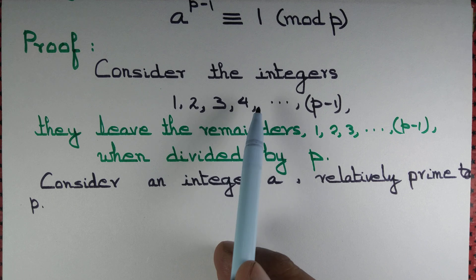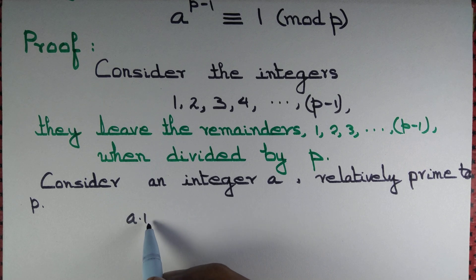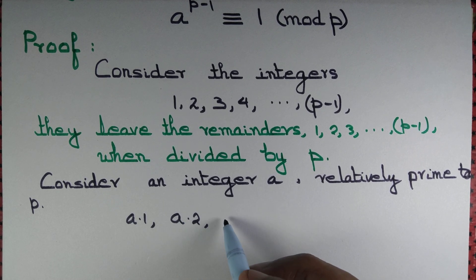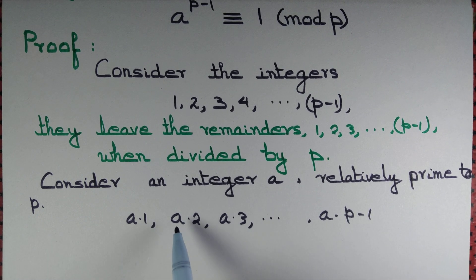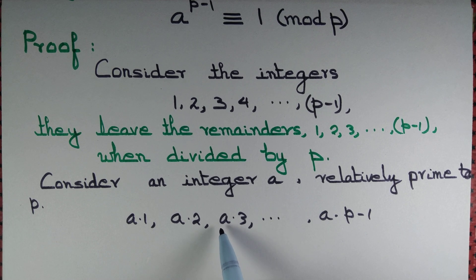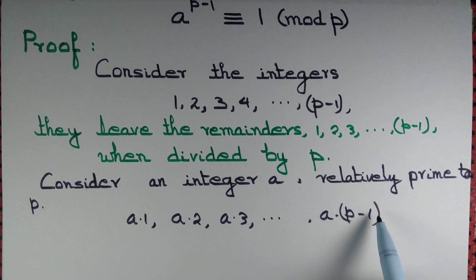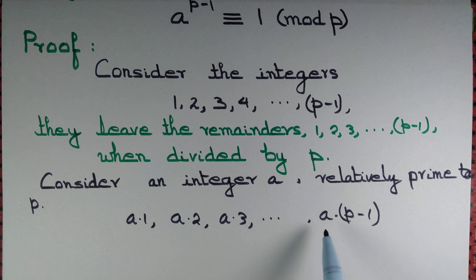The integers 1, 2, 3, ..., p minus 1 leave remainders 1, 2, ..., p minus 1. What about the integers a·1, a·2, a·3, ..., a·(p-1)? They are all relatively prime to p. p does not divide a, and p cannot divide 2a because if p divides 2a it must divide either 2 or a. Similarly p cannot divide a·(p-1) because p neither divides p minus 1 nor a. So they are all relatively prime to p and cannot leave remainder 0.